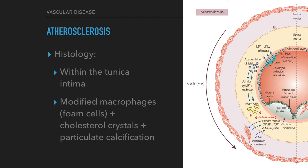The histological lesion forms primarily within the tunica intima, consisting of a nodular accumulation of soft, yellowish material within a harder plaque. It is composed of modified macrophages, foam cells, cholesterol crystals, and particulate calcification.